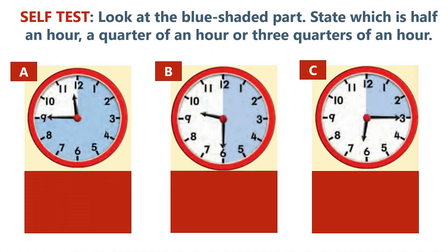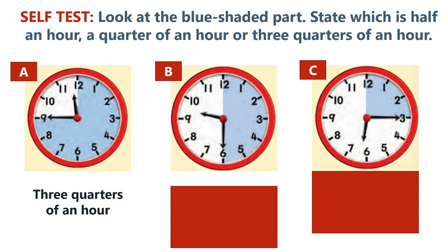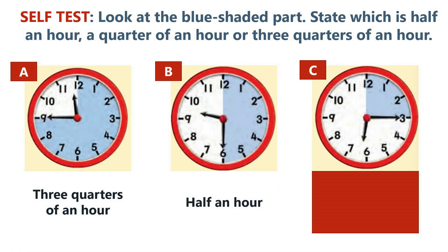Now let's do a self-test. Look at the blue shaded part and state which is half an hour, a quarter of an hour, or three quarters of an hour. Look at clock face A — yes, it is three quarters of an hour. Good. How about clock face B? Yes, it is half an hour.